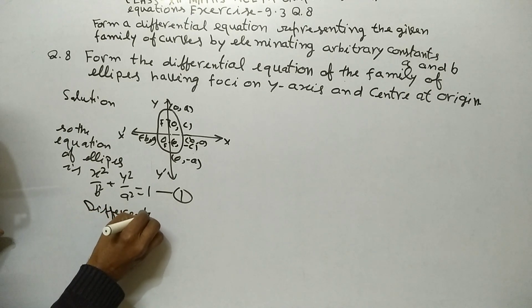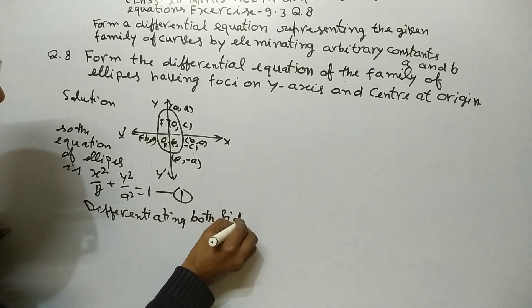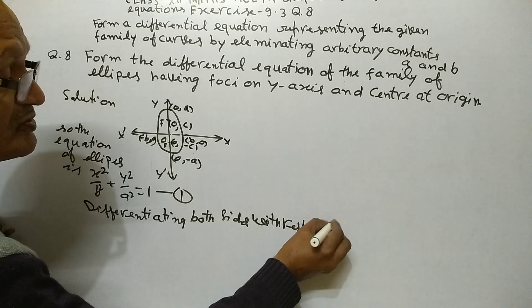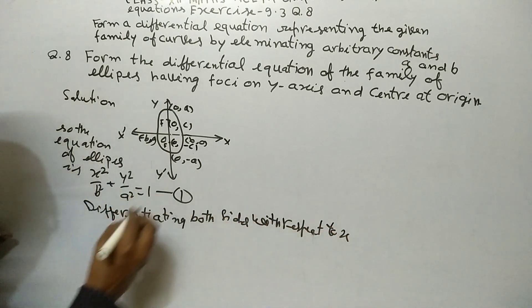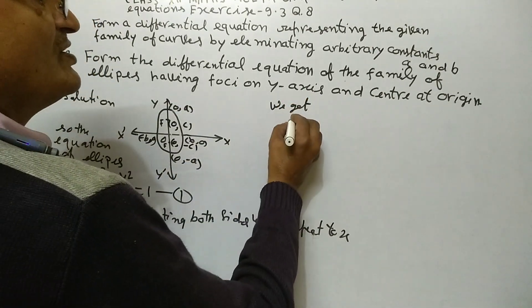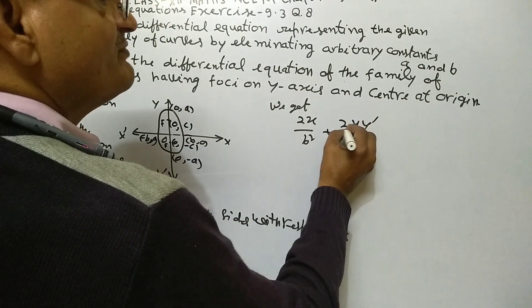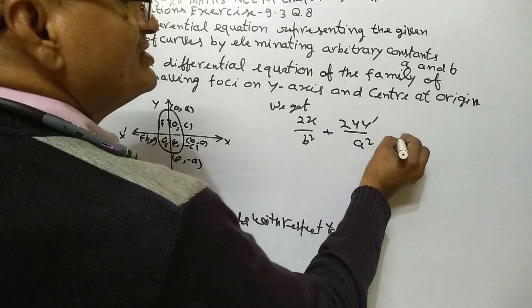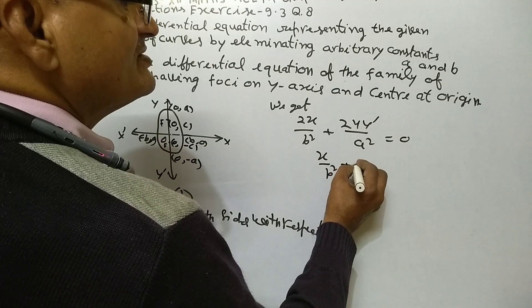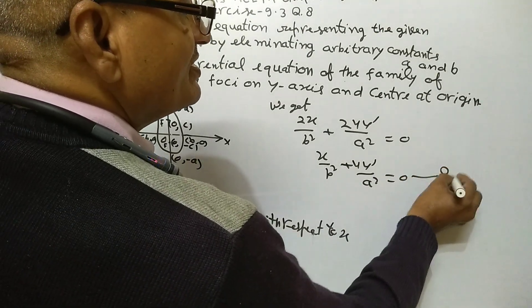Now differentiating both sides with respect to x, we get 2x / b² + 2y·y' / a² = 0, or x / b² + y·y' / a² = 0. This is Equation 2.